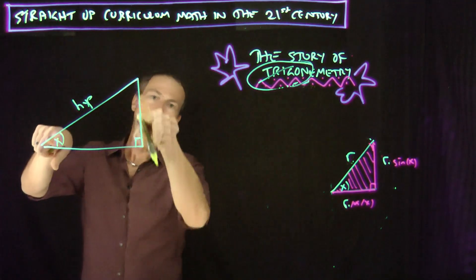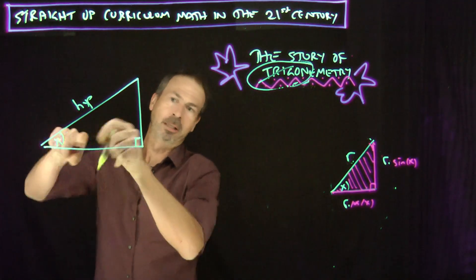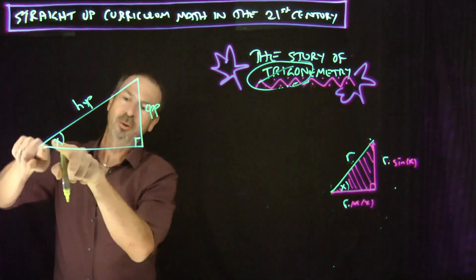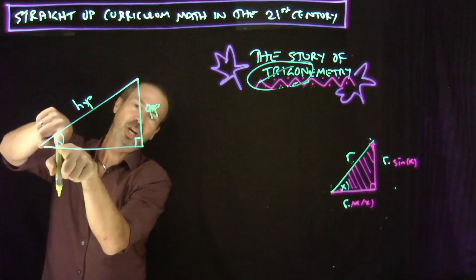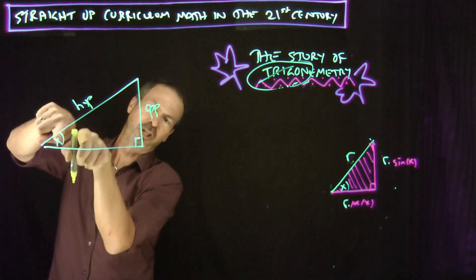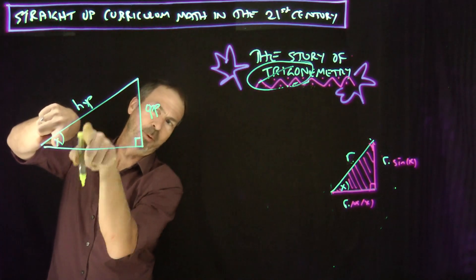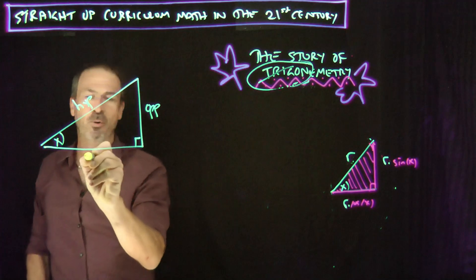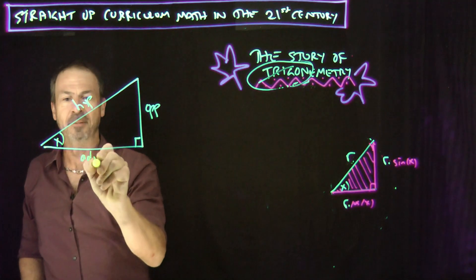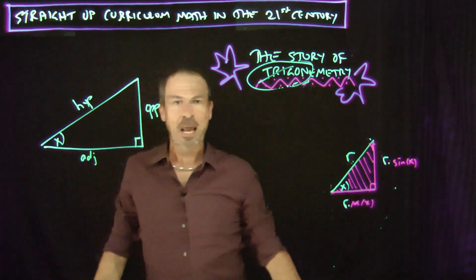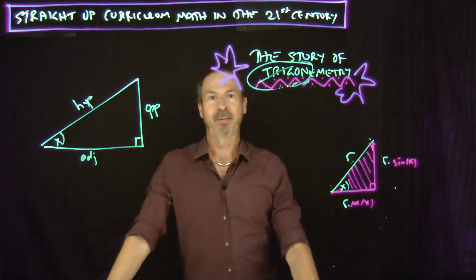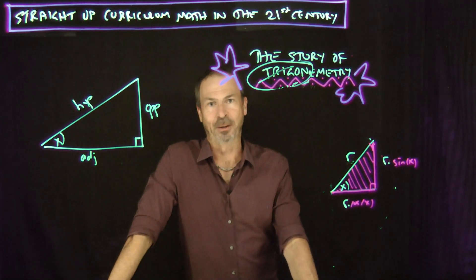Let's call the side that's opposite the angle you're interested in the opposite. And let's call the side that's adjacent to the angle — well there are actually two sides that are adjacent, but one's already got a name — the one that doesn't have a name, we'll call that the adjacent. So step one: become familiar with those three names for the sides of a right triangle.